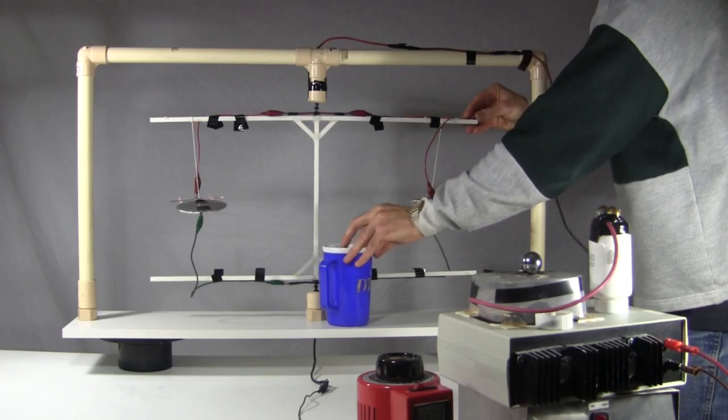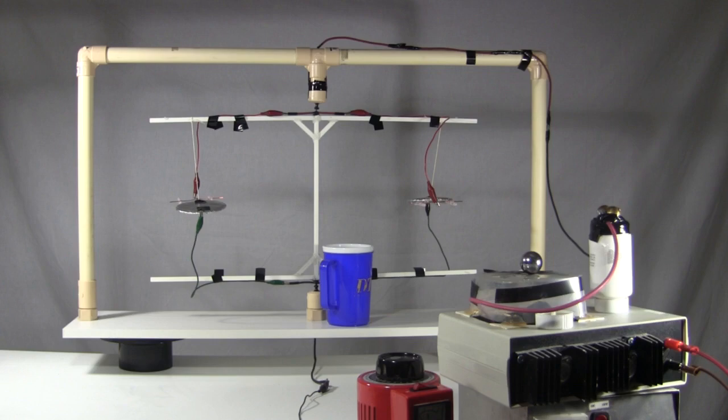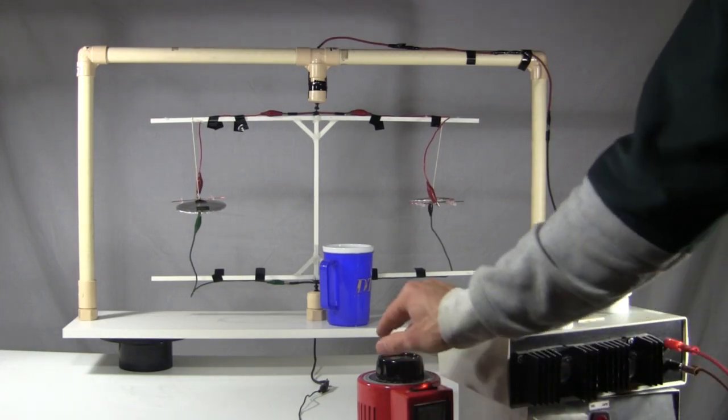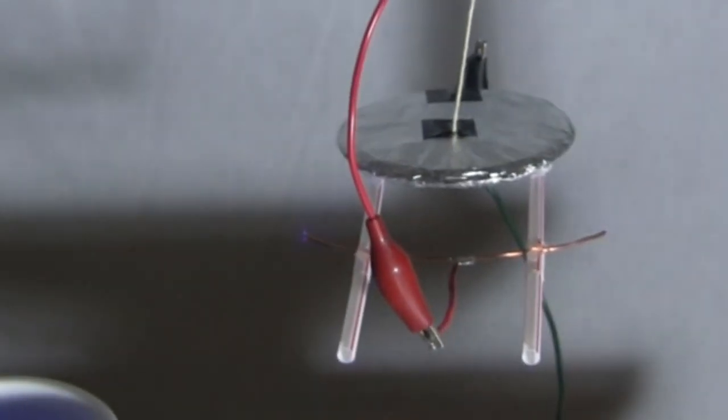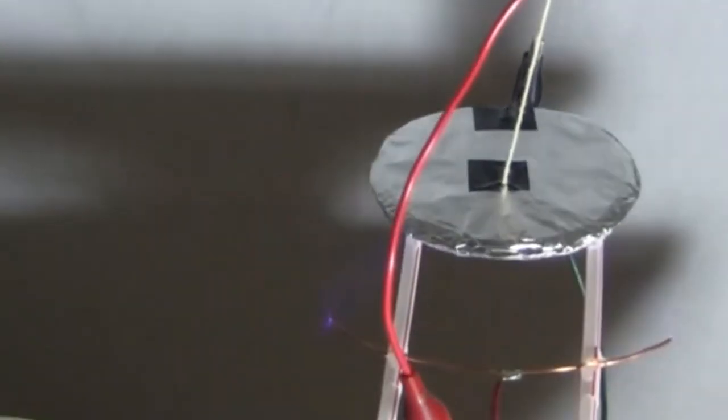I turn out the lights, and you can see plenty of purplish glow. That's called corona. To see it better, I put a plastic mug in the way of the rotor to prevent it from moving. I turn it on again, and now you can see that the corona is coming from the sharpish ends of the thick wire, and goes to the nearest edge of the disk.